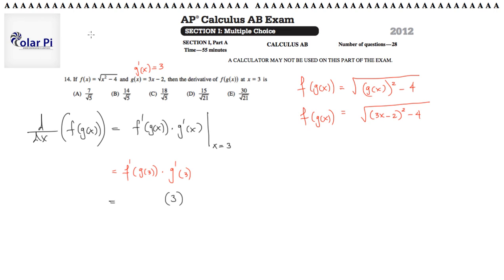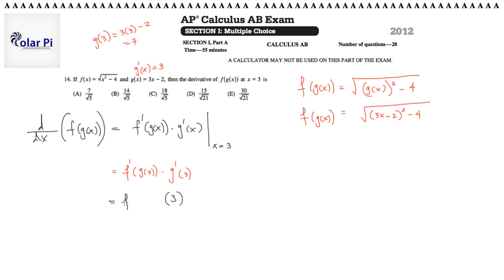Now I want to find f prime of g of 3 by first finding g of 3. We already have g here, so g of 3 is 3 times 3 minus 2, which equals 7. Knowing that g of 3 is 7, this part becomes f prime of 7. So what we're after is 3 times f prime of 7.